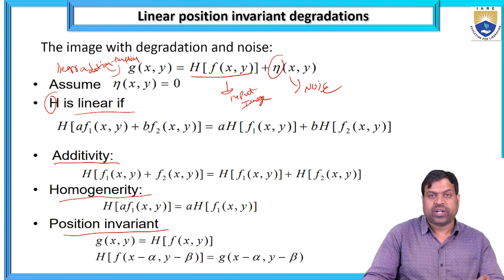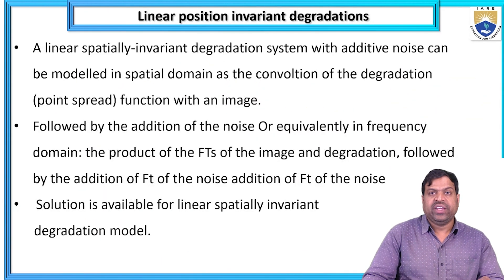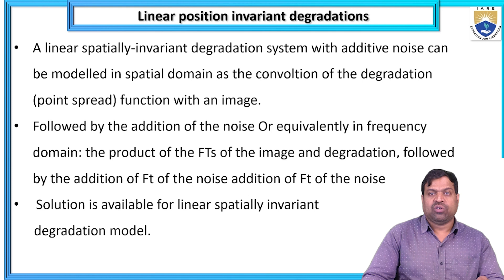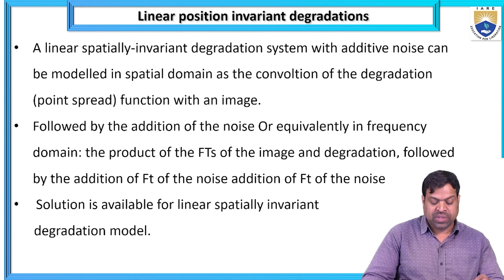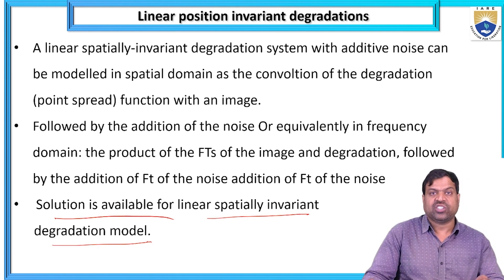There are several types of properties: linear, additive, homogeneity, and position invariant. A linear spatially invariant degradation system with additive noise can be modeled in spatial domain as a convolution of the degradation point spread function with an image, followed by the addition of the noise, or equivalently in the frequency domain. The solution is available for the linear spatially invariant degradation function.